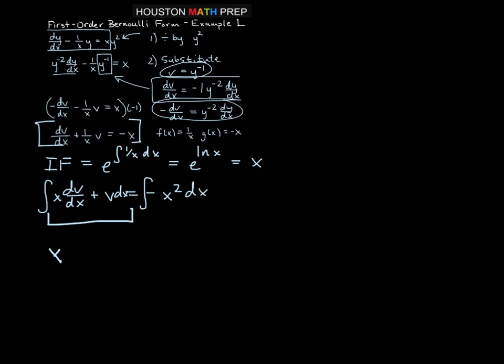The left side here is the product rule as usual, so that's our integrating factor, times our dependent variable there. So x times v is equal to, when we integrate negative x squared, we get negative x cubed over 3 plus c.